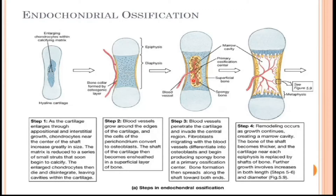That bone material starts depositing around the center part — this is called the primary ossification center. Finally, that part becomes porous bone internally and compact bone on the edges. This is the first step in endochondral ossification and it occurs within the diaphysis of the bone.